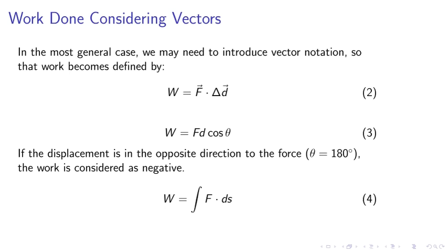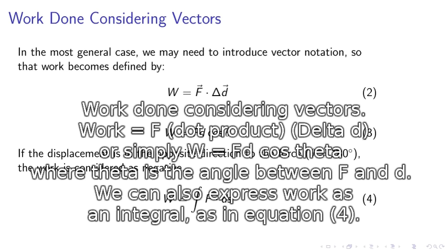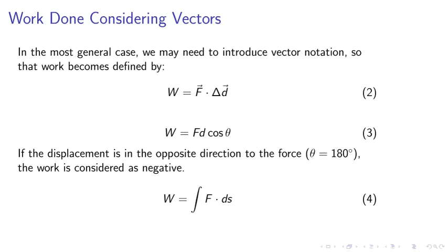Work done considering vectors. In the most general case, we may need to introduce vector notation so that work becomes defined by work equals F dot product D, or simply work equals F D cosine theta, where theta is the angle between F and D.